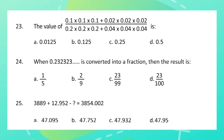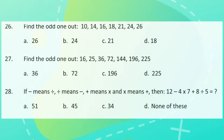Question 24: When 0.232323232323... (repeating) is converted into a fraction, then the result is? Question 25: 3889 + 12.952 minus what equals 3854.002? Question 26: Find the odd one out: 10, 14, 16, 18, 21, 24, 26.